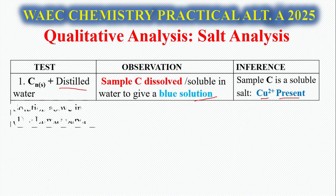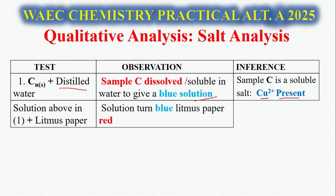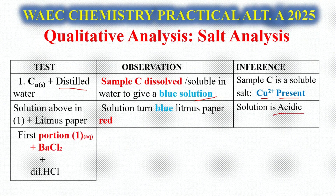You might also be asked to add the solution above to litmus paper. If you do that, the solution turns blue litmus paper red, which shows that the solution is acidic.